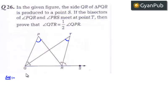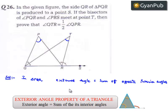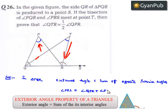In triangle PQR, we know that in any triangle, the external angle is equal to the sum of two opposite interior angles. Therefore, the exterior angle PRS is equal to the sum of two opposite interior angles, that is angle QPR plus angle PQR.